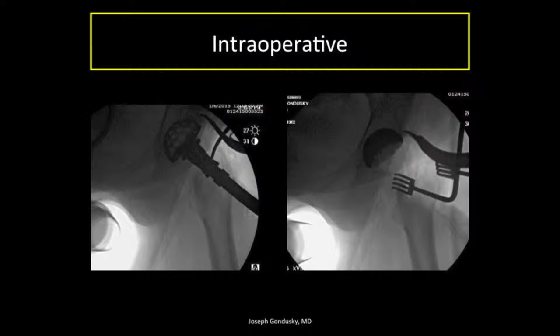Here are some fluoroscopy sequence shots — the final reamer in place and then the cup in place. I like to match the patient's native version and ensure that the anterior rim of the cup is covered so that they do not develop iliopsoas impingement, which is a real phenomenon and very uncomfortable for the patient without an easy solution. I like to feel my anterior and posterior acetabular rims and keep the cup confluent with those in order to match their version, being careful not to be fooled by osteophytes or wall deficiencies.